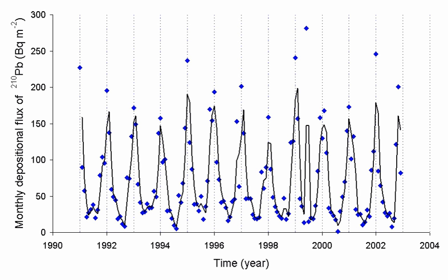Rutherford noticed that the compounds of thorium continuously emit a radioactive gas that retains the radioactive powers for several minutes, and called this gas emanation from Latin emanare — to elapse, and emanatio — expiration, and later thorium emanation — ThEm. In 1901, Rutherford and Harriet Brooks demonstrated that the emanations are radioactive, but credited the Curies for the discovery of the element. In 1903, similar emanations were observed from actinium by André-Louis de Biérin and were called actinium emanation.